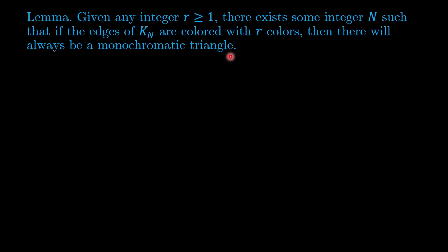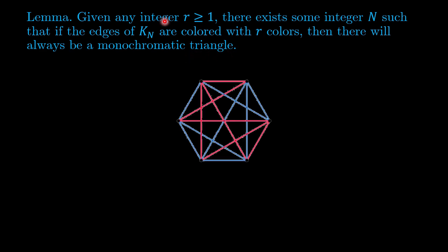So if the edges of the complete graph K_6 are colored with two colors, there will always be a monochromatic triangle. So this is just for illustration purposes. Now we prove the lemma for general r.